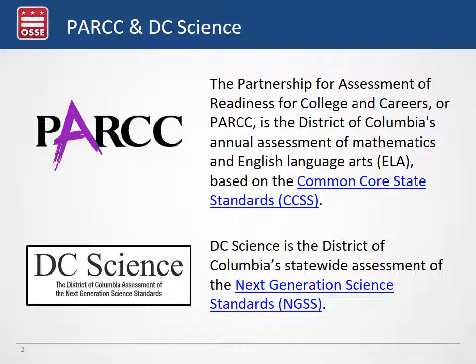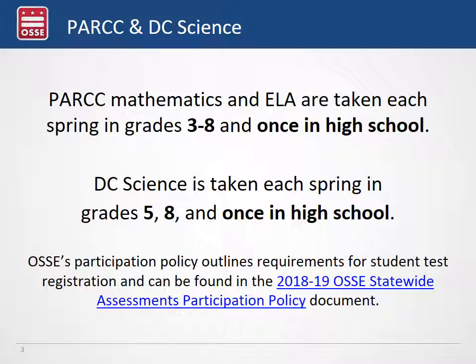The Park assessment measures DC's English language arts and mathematics standards and the DC Science assessment measures the Next Generation Science Standards. Park is given to students in grades 3 through 8 and once in high school, and DC Science is taken each spring in grades 5, 8, and once in high school biology. Participation policy for these assessments is on our website, so feel free to look at those to make sure that your students are enrolled for the appropriate assessments.